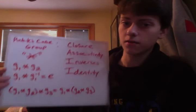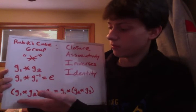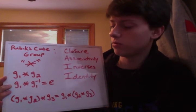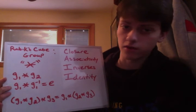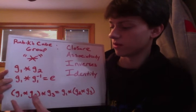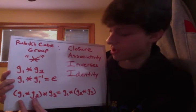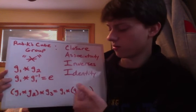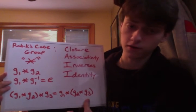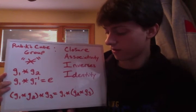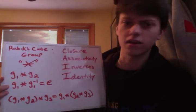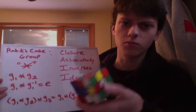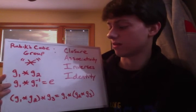As far as associativity, we can see that this statement holds. When we take three elements from the Rubik's Cube group — G1, G2, and G3 — and we rearrange the parentheses, meaning we perform G1 star G2 first followed by G3, and then perform G2 star G3 first followed by G1, they are equivalent. It's hard to see that with an actual cube, but that statement is true.